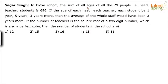In Vidya school, the sum of all ages of all the 29 people — the head, teachers and students — is 696. If the age of each head, each teacher and each student be 1 year, 5 years and 3 years more, then the average age of the whole staff would have been 3 years more. If the number of teachers is the square root of a 2-digit number which is also a perfect cube, then the number of students in the school are?